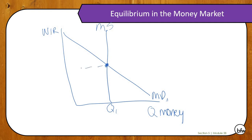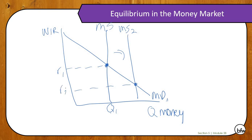We label our interest rate as R1 and our quantity as Q1. If the Federal Reserve increases the money supply through expansionary monetary policy, it shifts the supply curve to the right — you'll notice interest rates go down. That's what encourages people to borrow money; that's why people were happy buying boats and cars. If the Federal Reserve wants to decrease the money supply, they shift it to the left, which causes interest rates to go up.